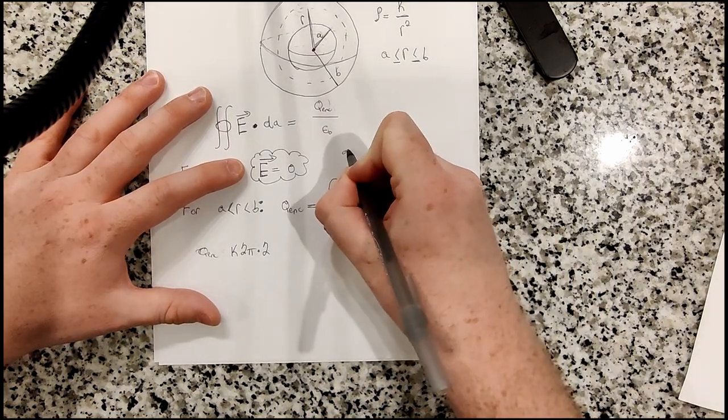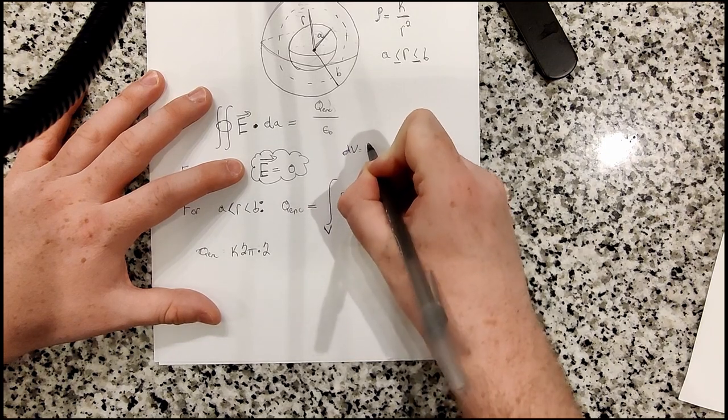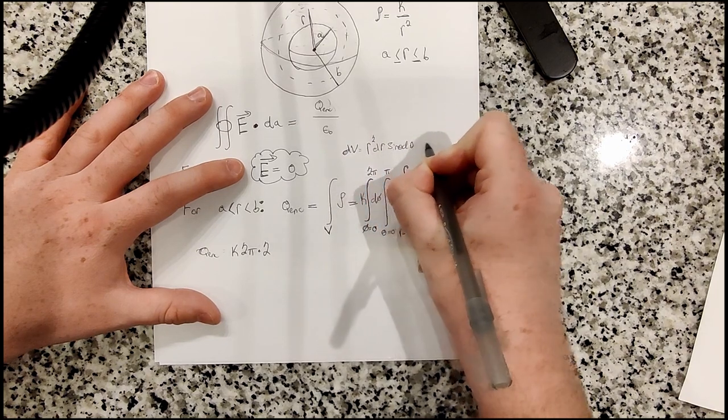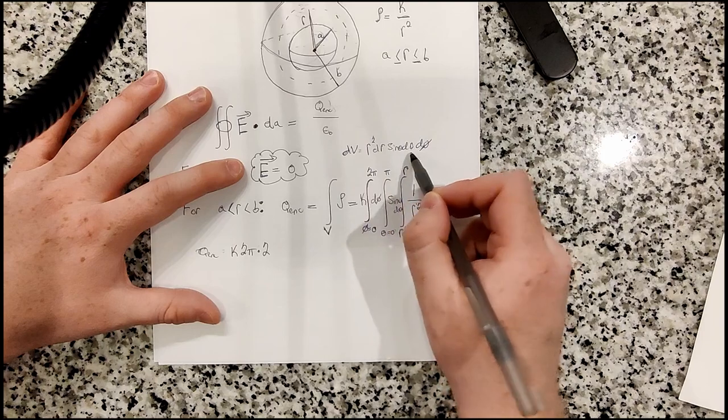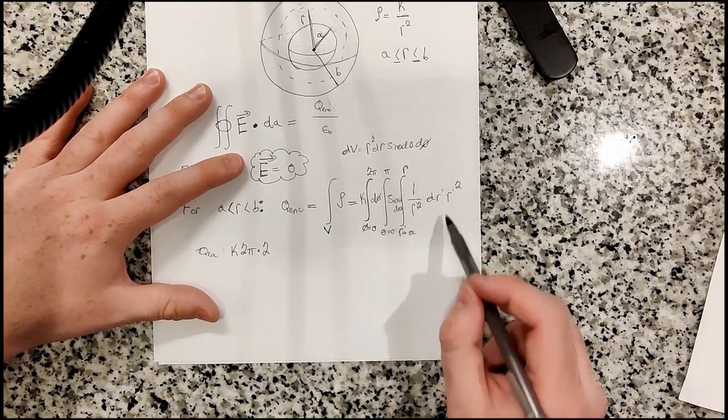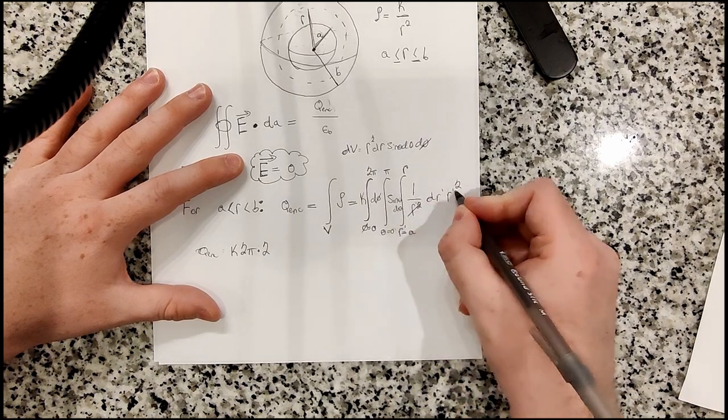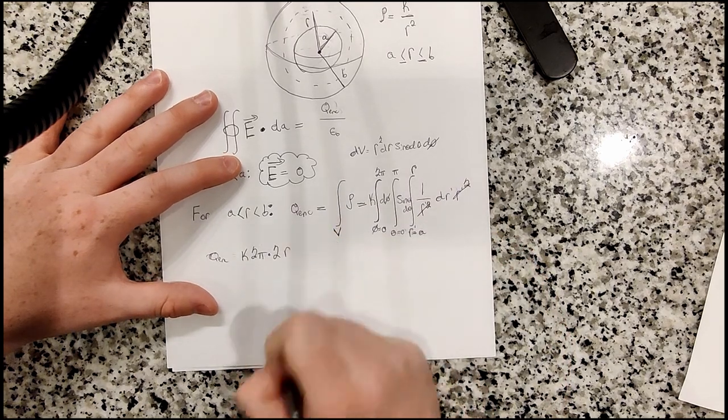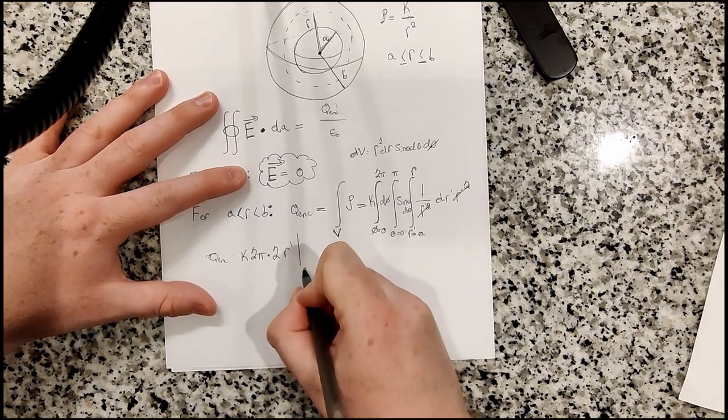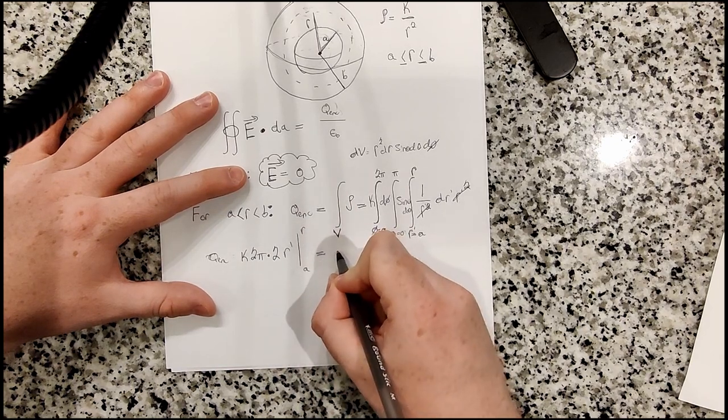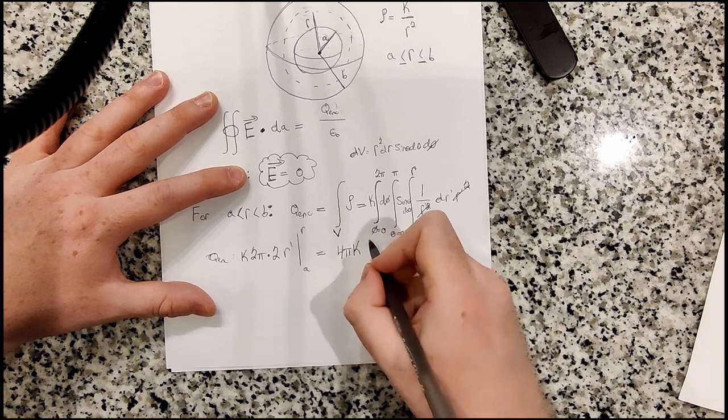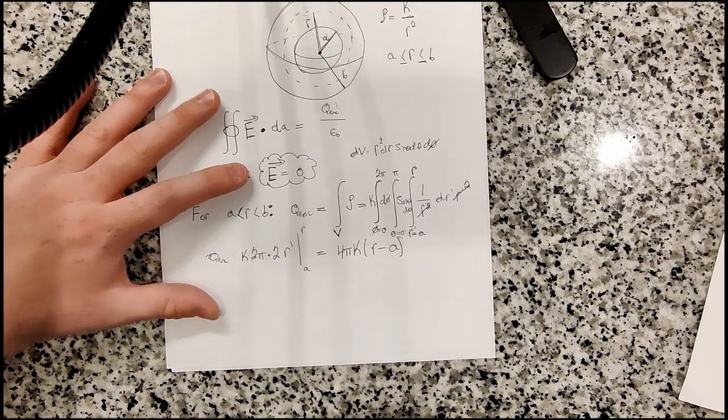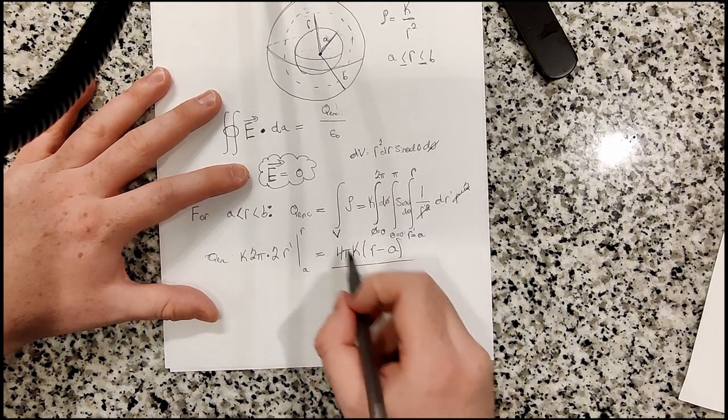There's another r squared also from the dv, the differential volume factor. So if you recall, like dv in spherical coordinates is like r squared dr, sin of theta d theta d phi. Or you can write it like r squared sin of theta dr d theta d phi. So I forgot to add an extra factor of r squared. So that actually cancels out the r prime squared there. And so actually what we get is just r prime evaluated from a to r. And so this ends up being 4 pi k times r minus a.